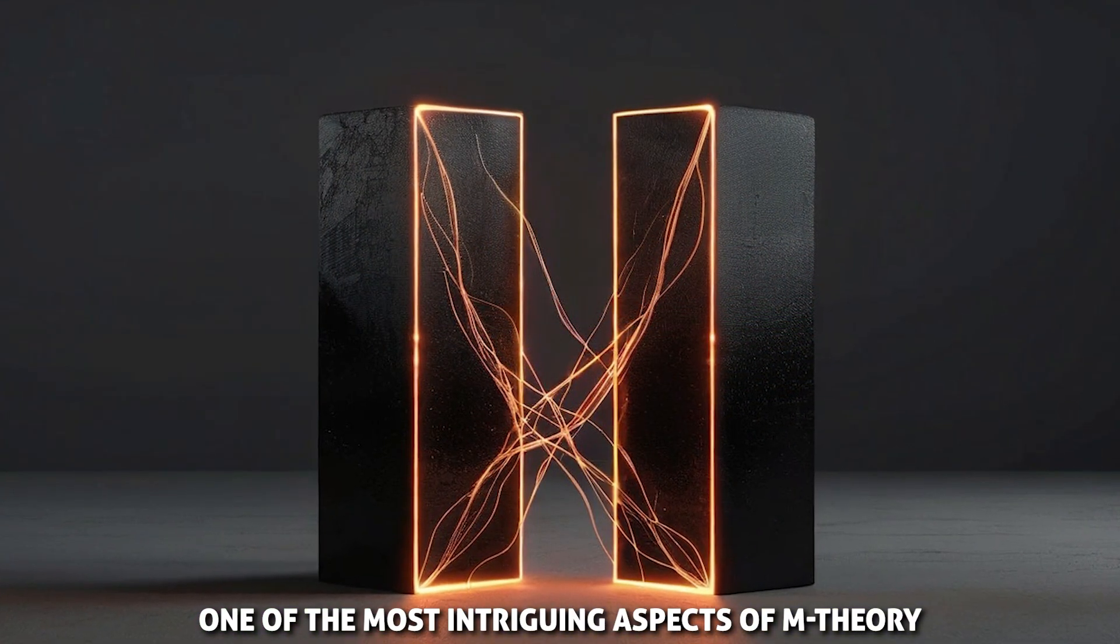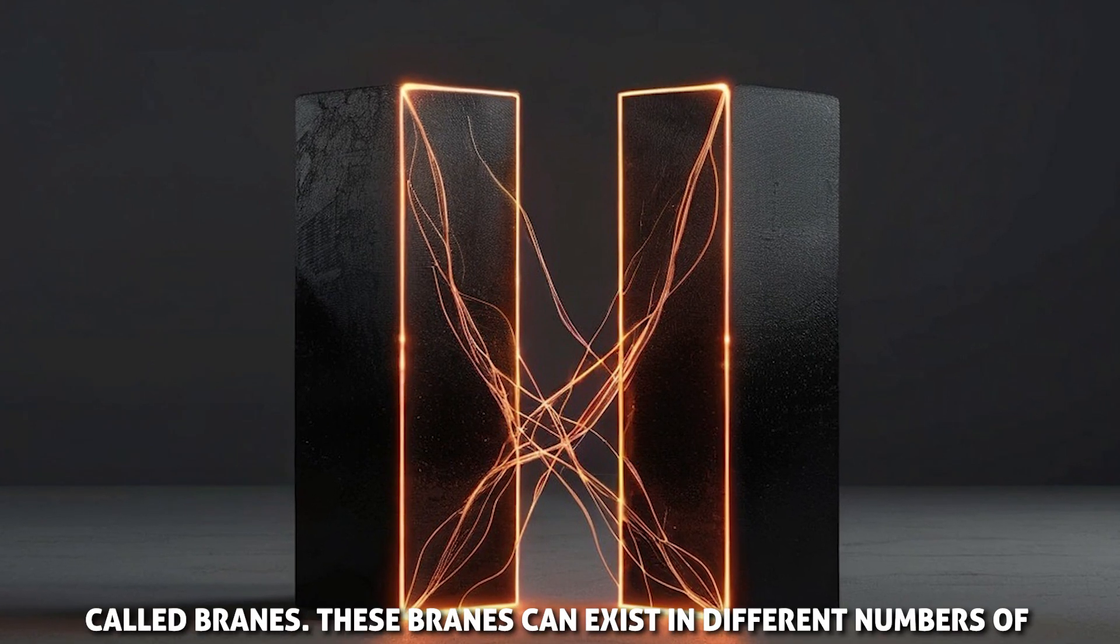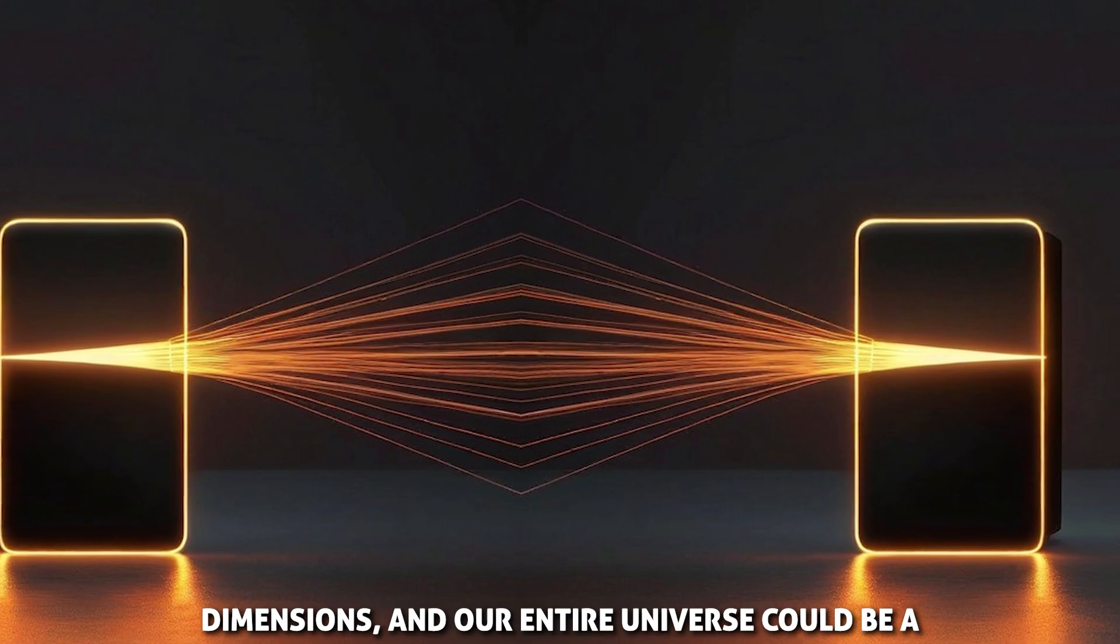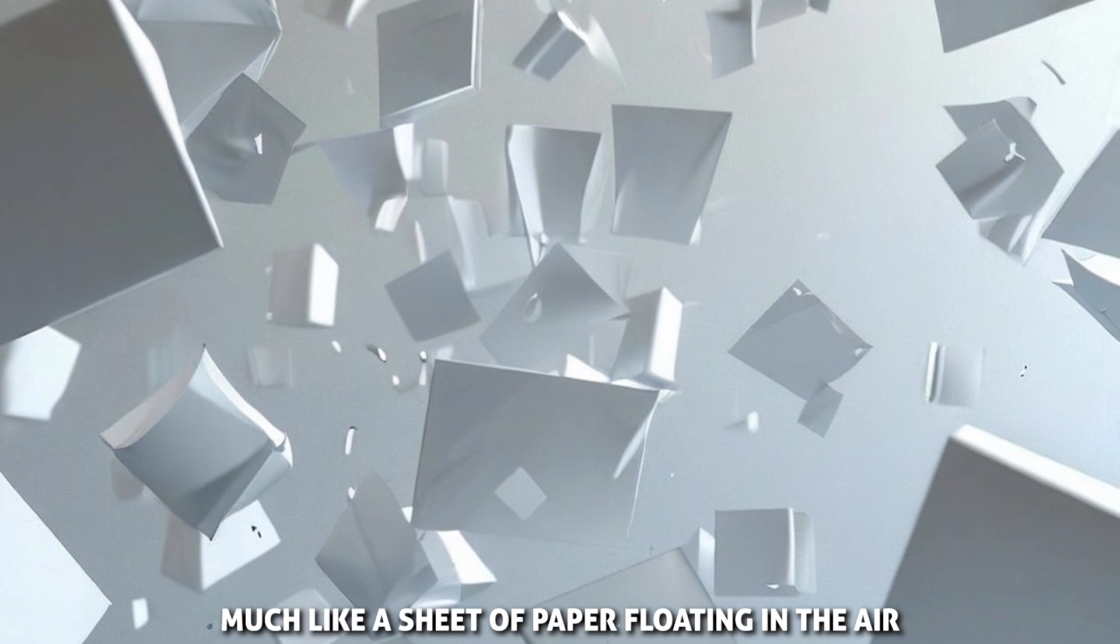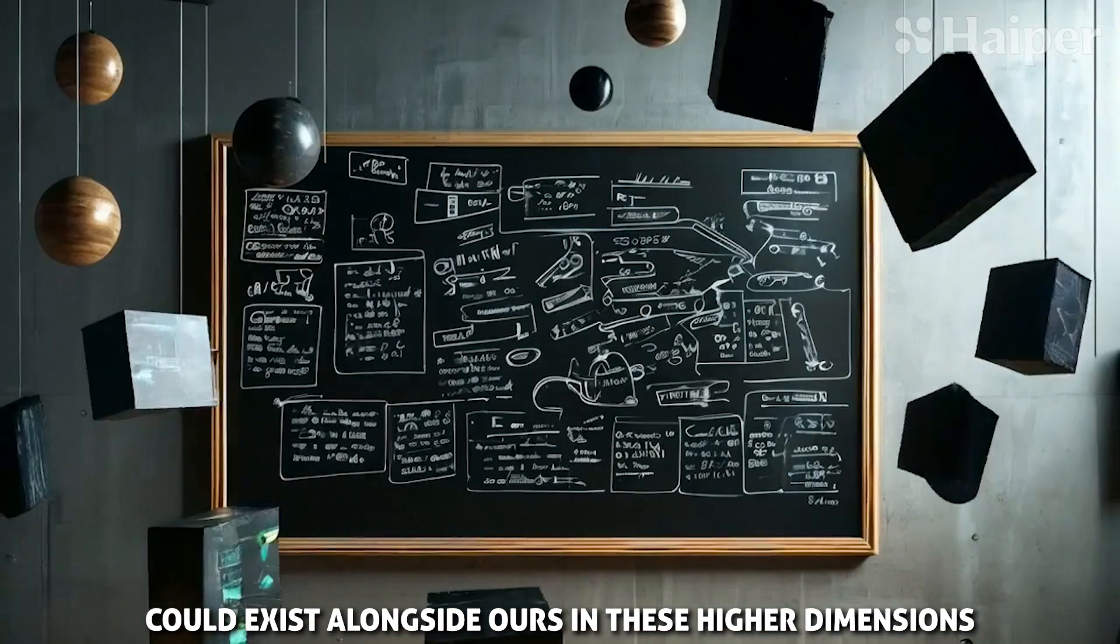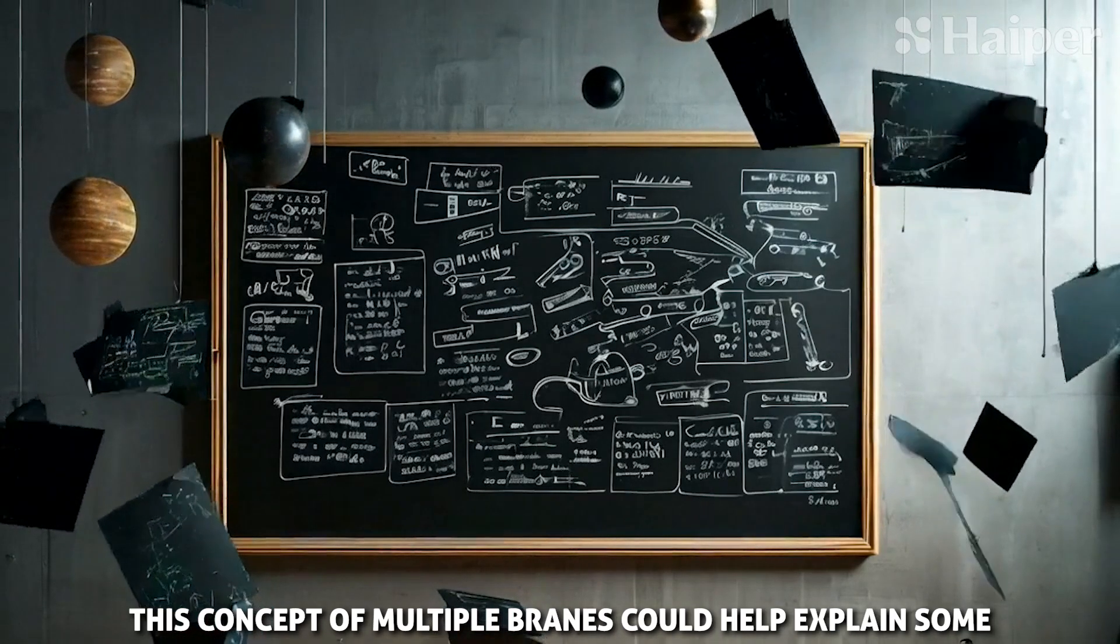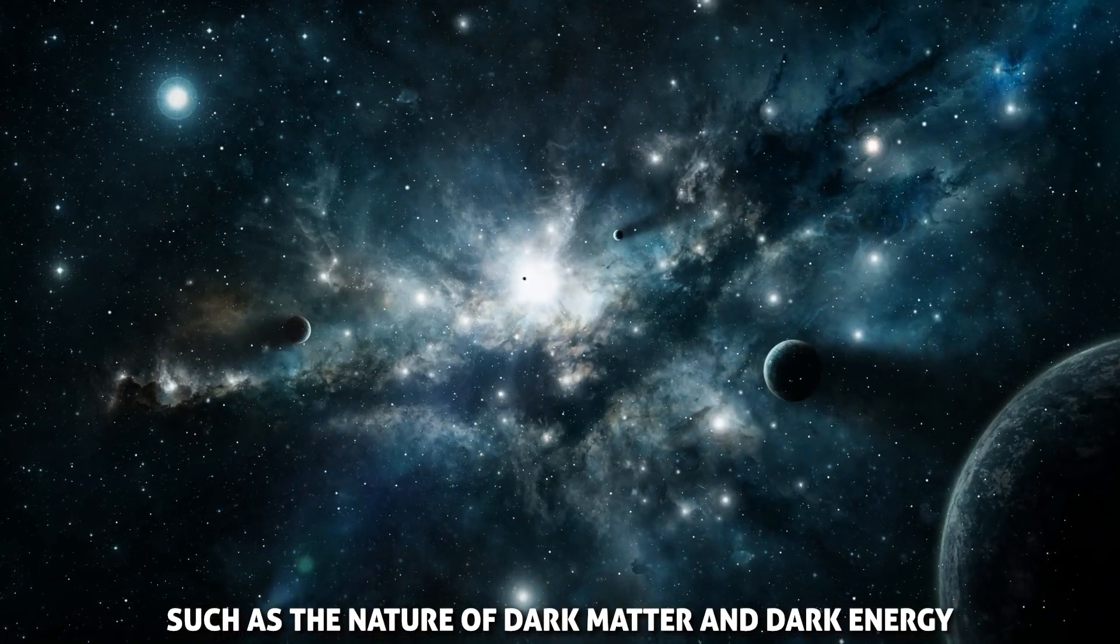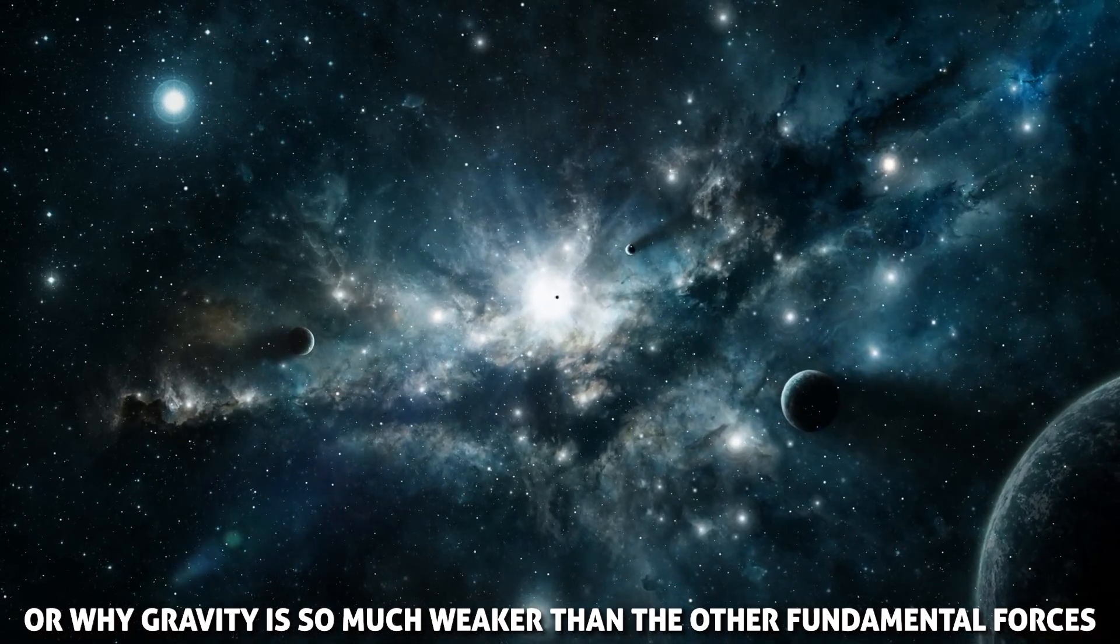One of the most intriguing aspects of M-theory is that it allows for the existence of multidimensional objects called branes. These branes can exist in different numbers of dimensions, and our entire universe could be a three-dimensional brane floating in a higher dimensional space, much like a sheet of paper floating in the air. Other branes and even other universes could exist alongside ours in these higher dimensions. This concept of multiple branes could help explain some of the biggest mysteries in cosmology, such as the nature of dark matter and dark energy, or why gravity is so much weaker than the other fundamental forces.